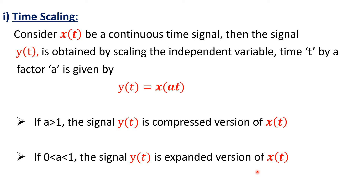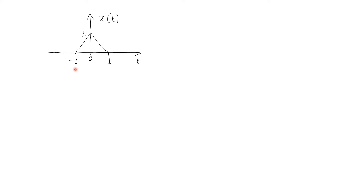Let's take one example. Let this be a continuous time signal x(t). Now let y(t) = x(2t). So here the value of a is 2, which is greater than 1. If a value is greater than 1, then y(t) will be the compressed version of x(t), and y(t) is compressed by a factor of 2.